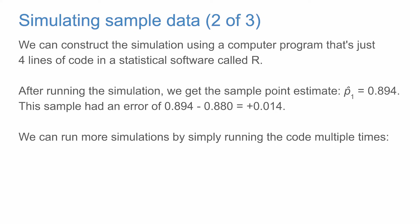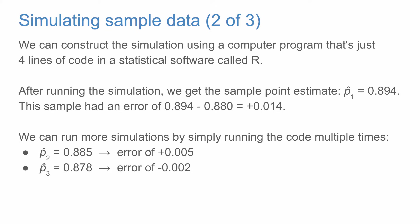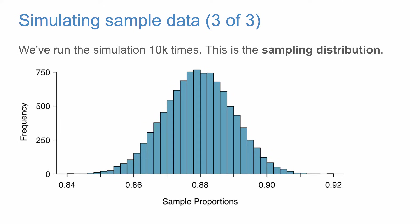We can run more simulations by simply rerunning the code multiple times. A second run gives 0.885, an error of +0.005. A third gives 0.878, an error of −0.002. A fourth gives p4-hat = 0.859, an error of −0.021. We modified the program to run 10,000 times, producing 10,000 sample proportions, which we've plotted in a histogram.